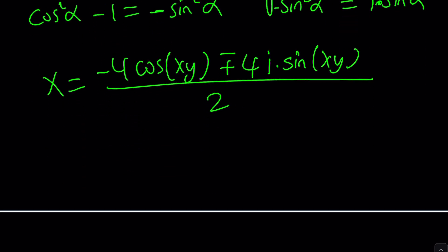And that should give us the x value, right? Well, kind of. But what is that supposed to mean? We're dividing everything by 2, so that becomes negative 2 cosine of xy plus minus 2i sine xy.